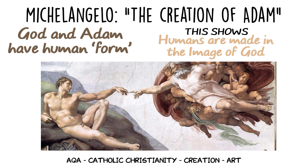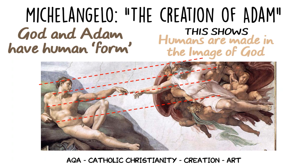Both Adam and God have been painted in human form, which demonstrates the concept that humans are made in the image of God. Some scholars point out that this connection is made stronger by the fact that the various parts of God and Adam line up neatly — for example, the eyes, the chest, the fingers, and the feet.